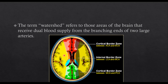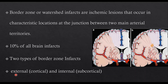What are watershed areas? They are those areas that receive dual blood supply from the branching of two large arteries. These are the watershed areas, and they are divided into two types: external and internal. Watershed infarcts are infarcts that occur at these characteristic locations, and they account for almost 10% of all infarcts.